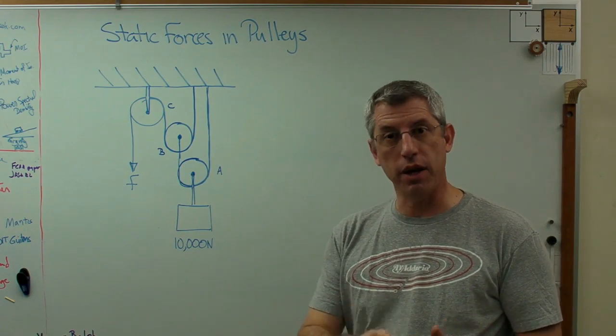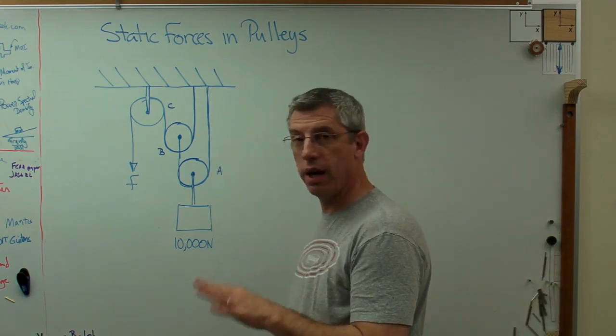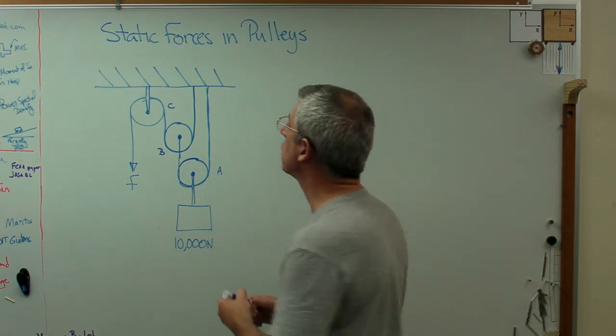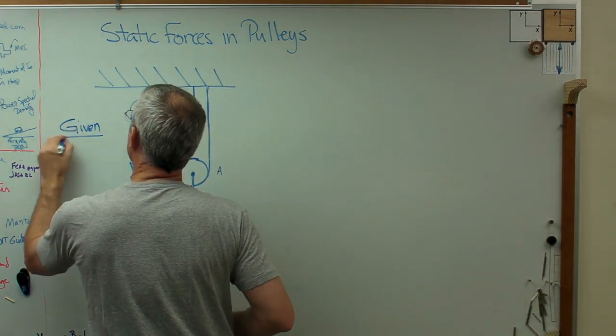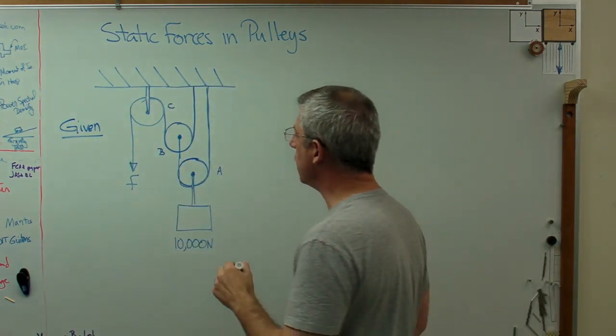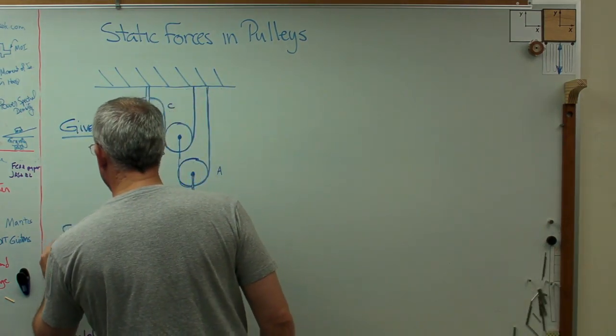So using GFSA format, we're going to go given, find, solution, answer. So this is the given. We know all this stuff right here. We're assuming the pulleys are frictionless and all the things we need to assume to make the problem simple.